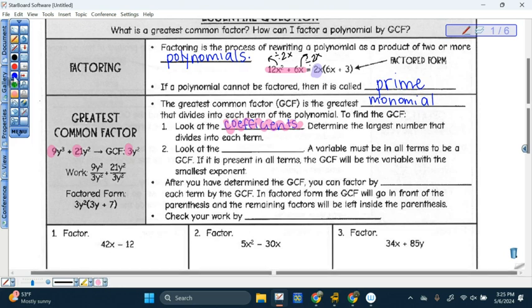And then my next step is to look at the variables. In order for a variable to be a part of the greatest common factor, it must be present in all terms. So if it is present in all of the terms, the GCF is going to be the variable with the smallest exponent. So my variables are obviously the letters, y cubed and y squared. So I have a y present in all of the terms. So I look for the one that has the smallest exponent. It should be y squared. And that's the part of my GCF.